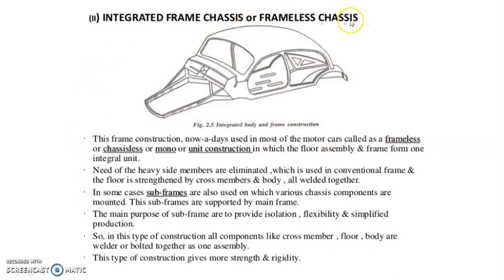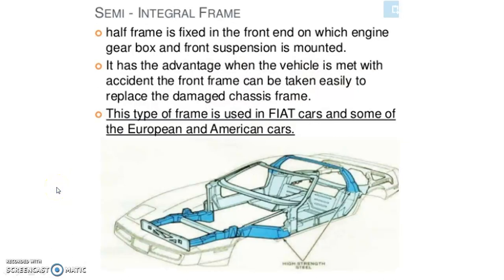Integrated frame chassis, or frameless chassis: This frame construction, used nowadays in most passenger cars, is called frameless, chassisless, or unit construction, in which the floor assembly and frame form one integral unit. The need for heavy side members is eliminated; the floor is strengthened by cross members and body, all welded together. Semi-integral frames: A half frame is fixed at the front end on which the engine, gearbox and front suspension are mounted. When the vehicle meets with an accident, the front frame can be easily replaced. This type of frame is used in Fiat cars and some European and American cars.